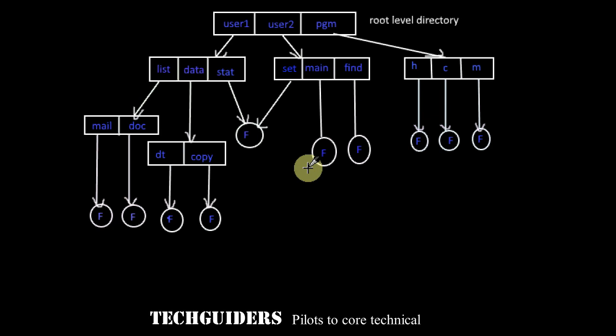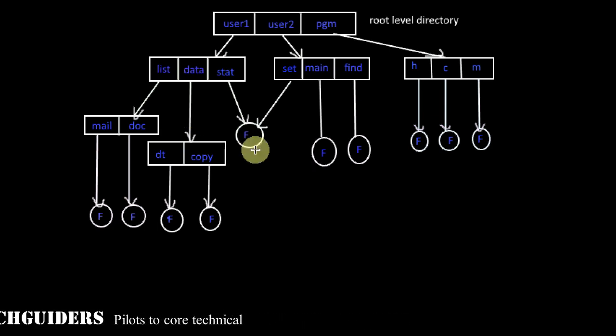The Acyclic Graph directory structure is used whenever a file has to be shared. Not only a file, sometimes if a group of files have to be shared, they can be together kept in a directory and the directory can be made shared. A shared file or a subdirectory will appear in the file system in more than one place at a time.